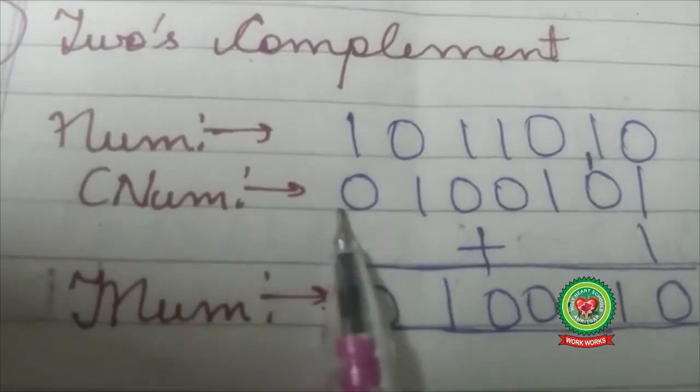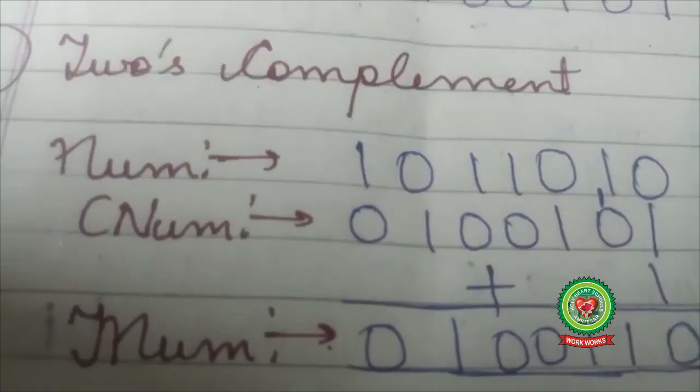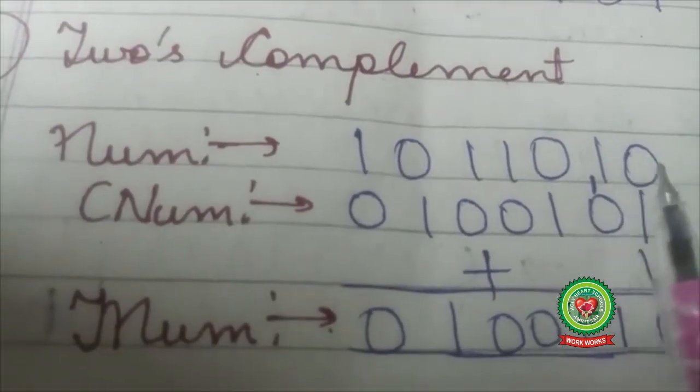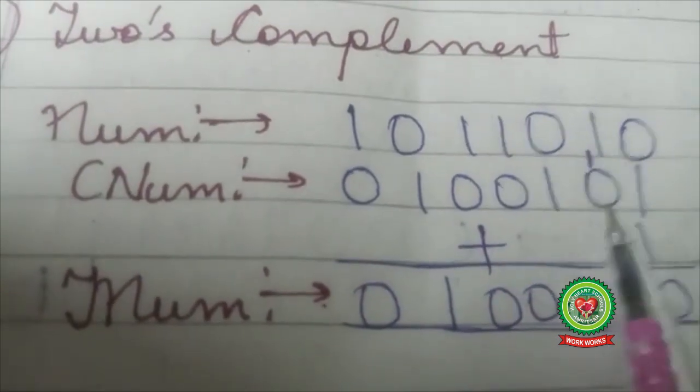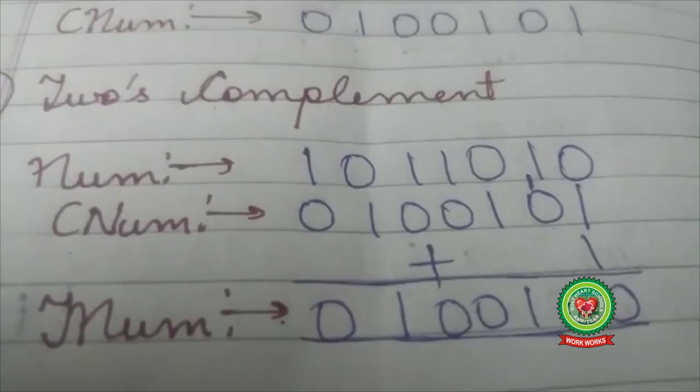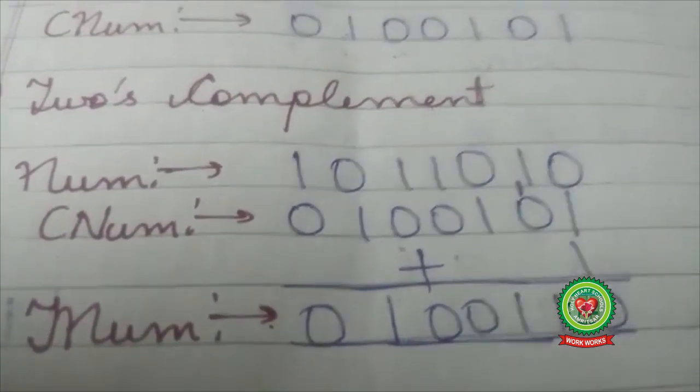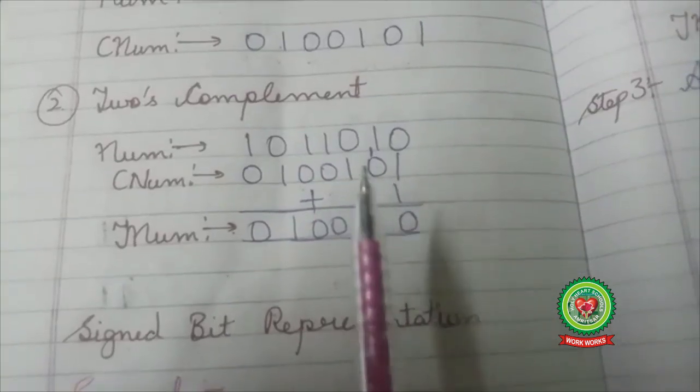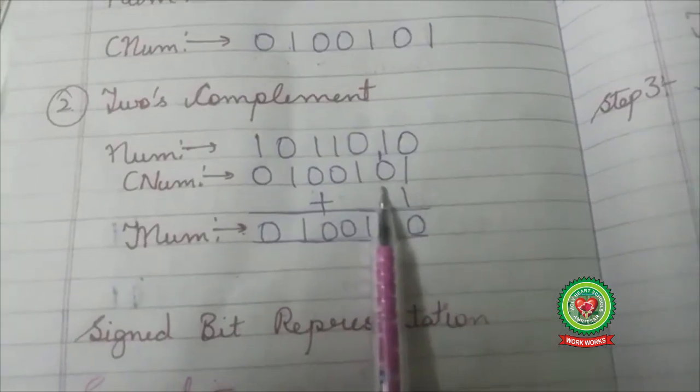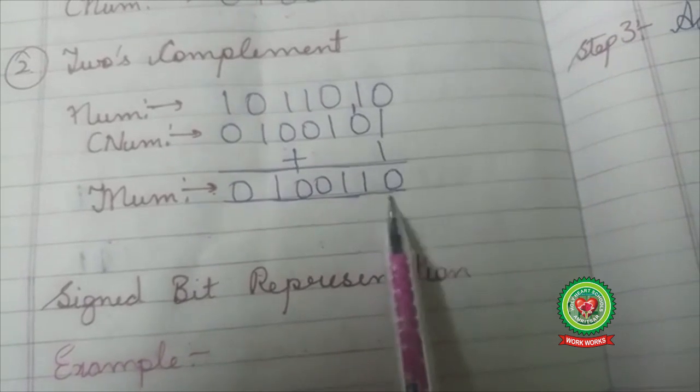Students, how is this number formed? By inverting 0 to 1 and 1 to 0. Now for finding two's complement, I will add 1 to the one's complement. So 1 plus 1 is 10.